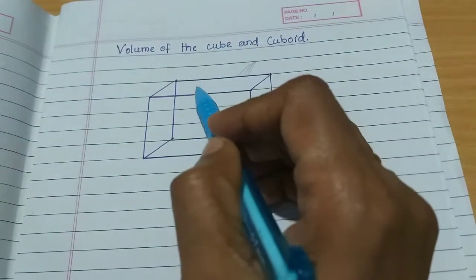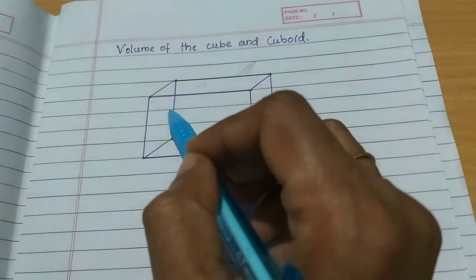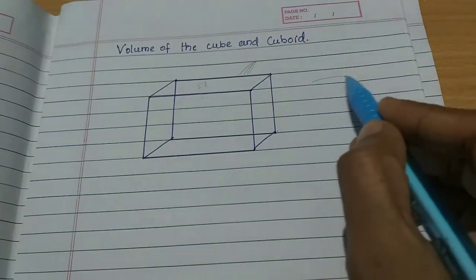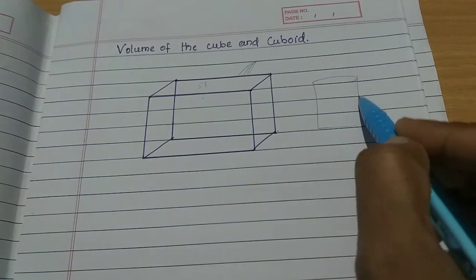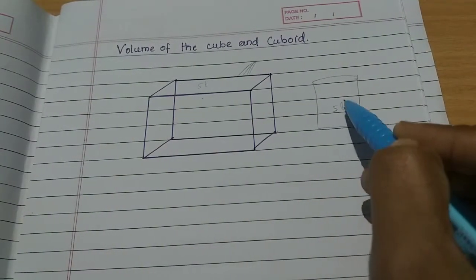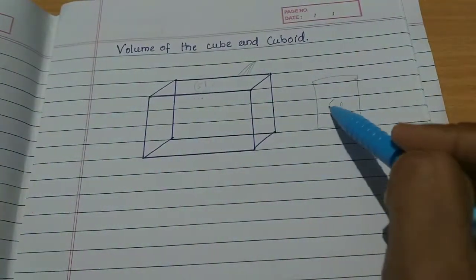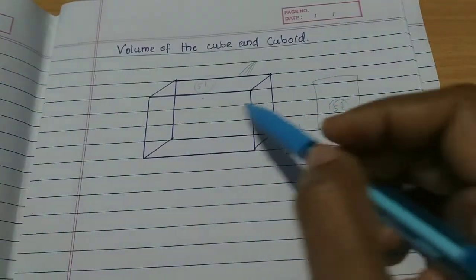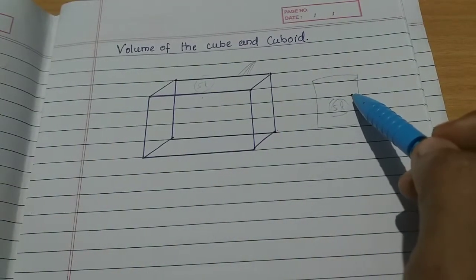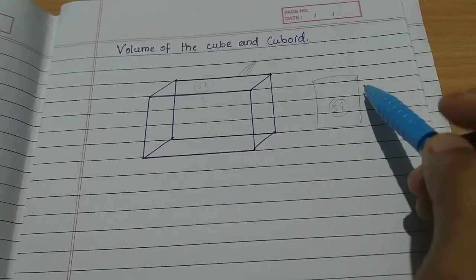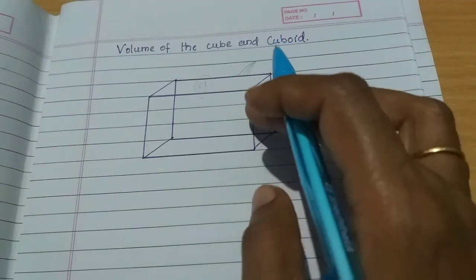If you add 5 liters to a cuboid shape, or to a cylinder shape, that's 5 liters — that is the volume. The volume is how much space it occupies.